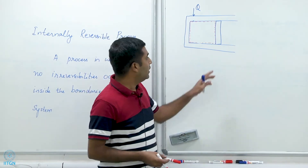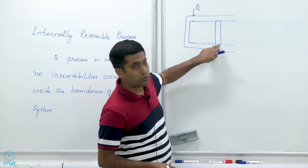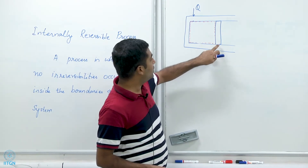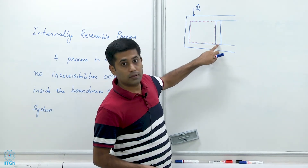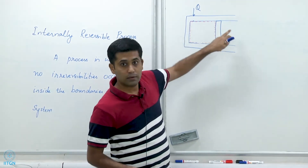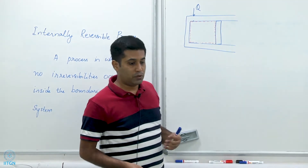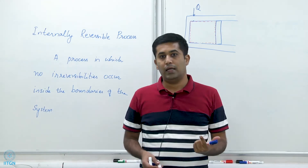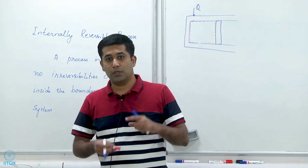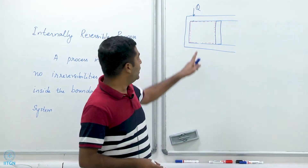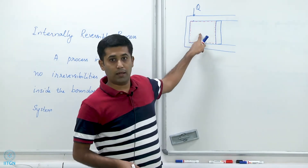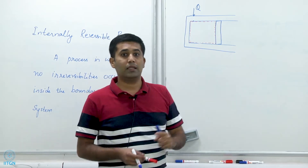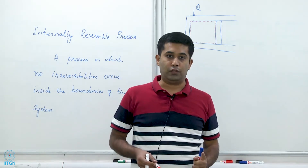If I am able to achieve that — and because the friction is also outside the system, between the piston and the cylinder which is outside the system as defined here — if I am able to avoid friction, avoid temperature gradients, and avoid unrestrained expansion within the boundary of the system, then I can have an internally reversible process.